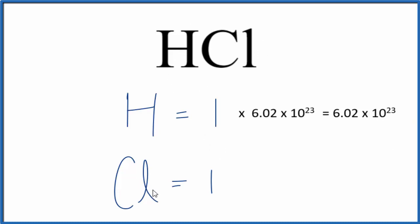Same goes for the chlorine down here. We just multiply this by Avogadro's number. And in one mole of HCl, we'd have 6.02 times 10 to the 23rd atoms of chlorine.